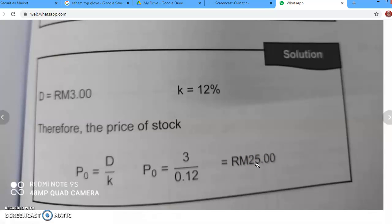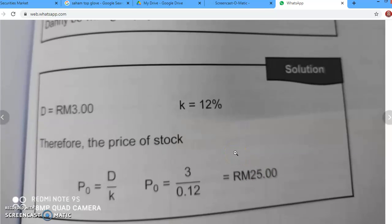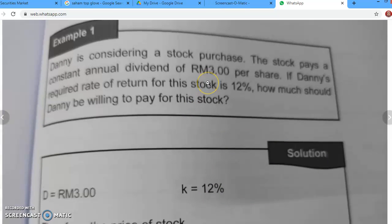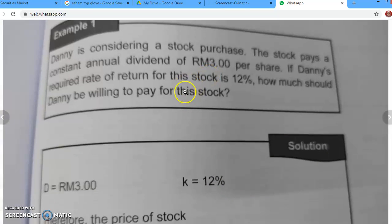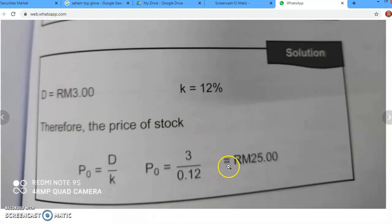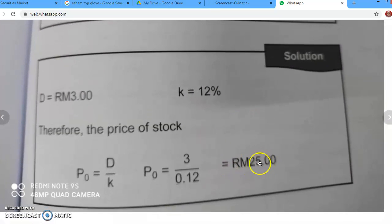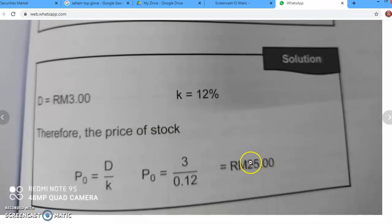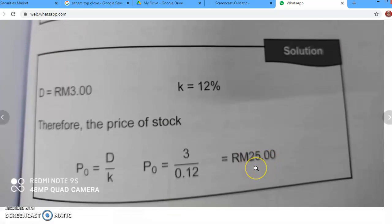So itu salah satu contoh lah if the question ask if we compare to the current market price. But for this question, dia tak tanya. So just tanya what are the price that Danny willing to pay. So kita akan cari nilai intrinsic price for the stock. So this is the price which is RM 25.